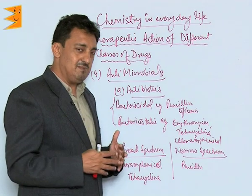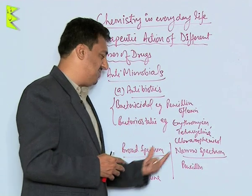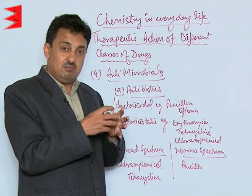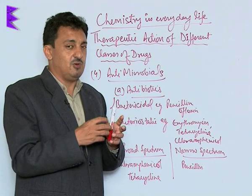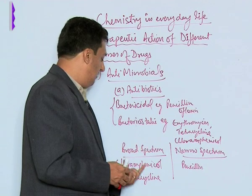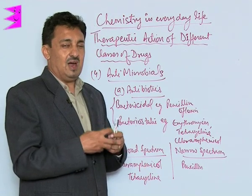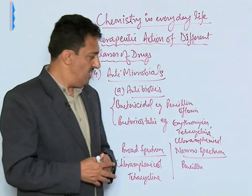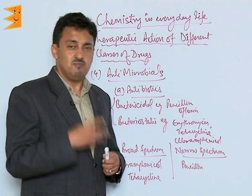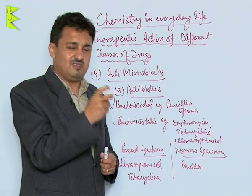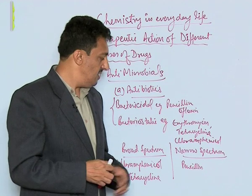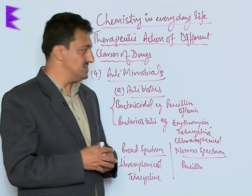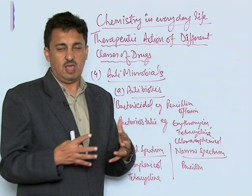We also classify antibiotics into two categories: broad spectrum and narrow spectrum. Broad spectrum antibiotics are those where one antibiotic can be used for curing many diseases — like chloramphenicol and tetracycline. These are called broad spectrum antibiotics. Narrow spectrum antibiotics are very specifically used for specific types of diseases or infections. Penicillin is a narrow spectrum antibiotic.